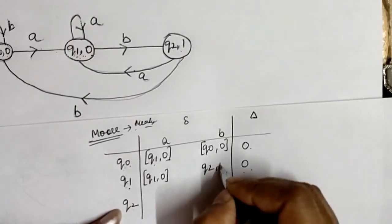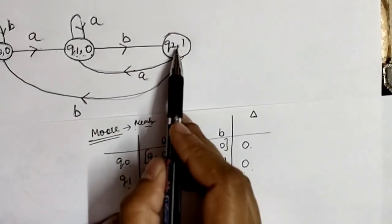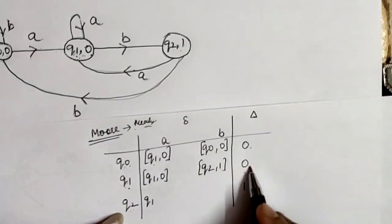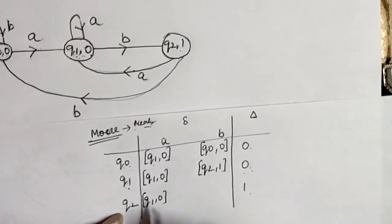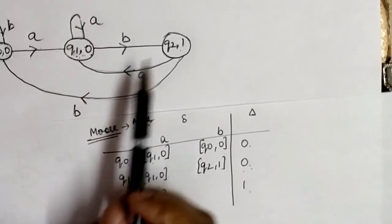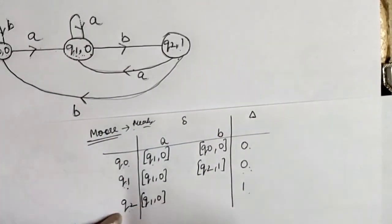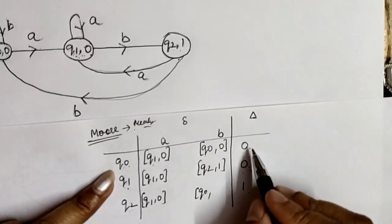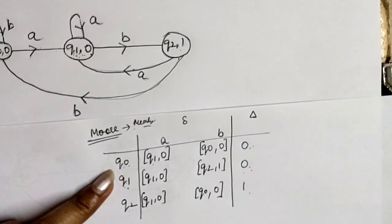Q1 with input B moves to Q2, and Q2 is associated with output 1, so this 1 is associated with this transition. Q2 with input A moves to Q1, and Q1 is associated with output 0, so this 0 is associated with this transition. Q2 with input B moves to Q0 state, and Q0 is associated with output 0, therefore this 0 is moved to this transition.